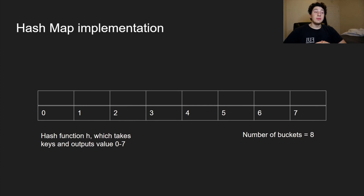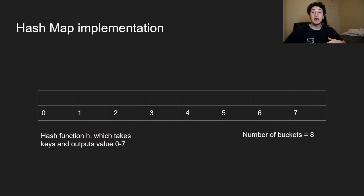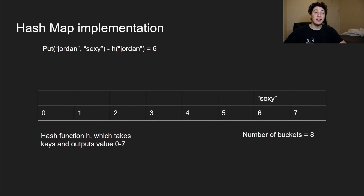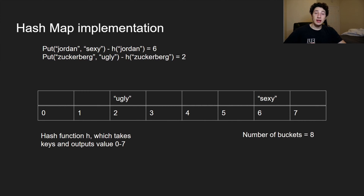In terms of the implementation, we start with an empty array. Our hash function H takes in keys and outputs a value from zero to seven, which are the indices of the underlying array — these are known as buckets, so we have eight buckets here. The first thing we do is put a key in: the key 'Jordan' hashes to index six, and we place it there. Similarly, another put operation maps a value to index two.